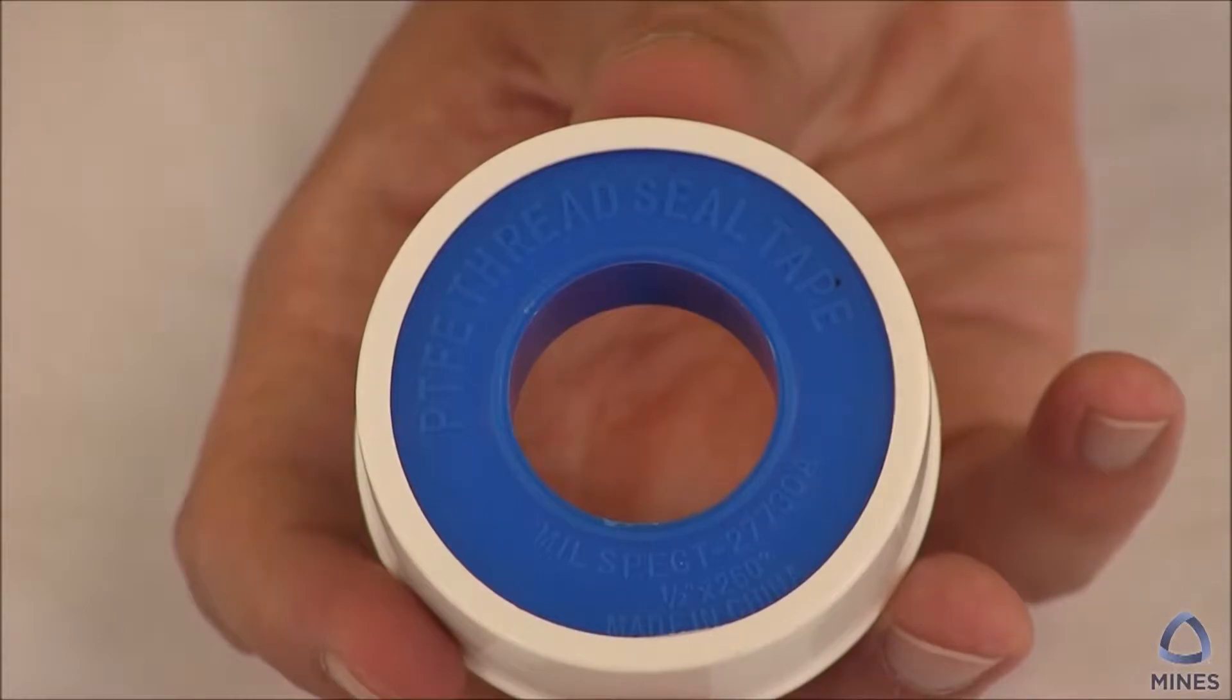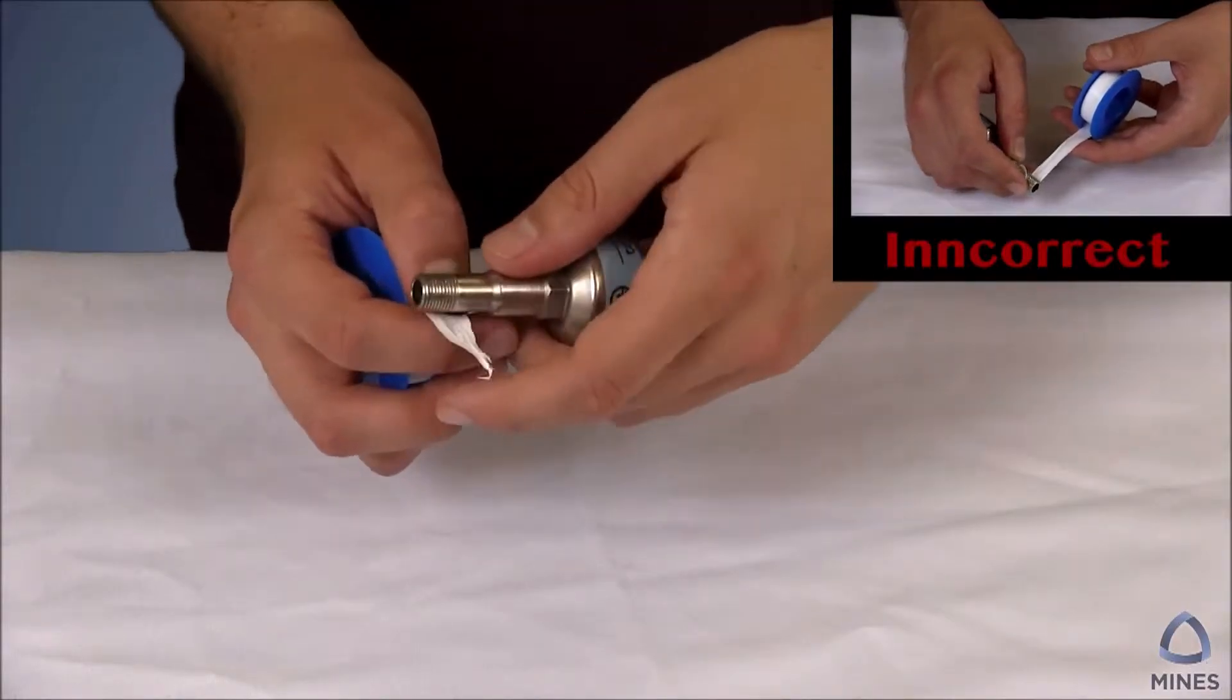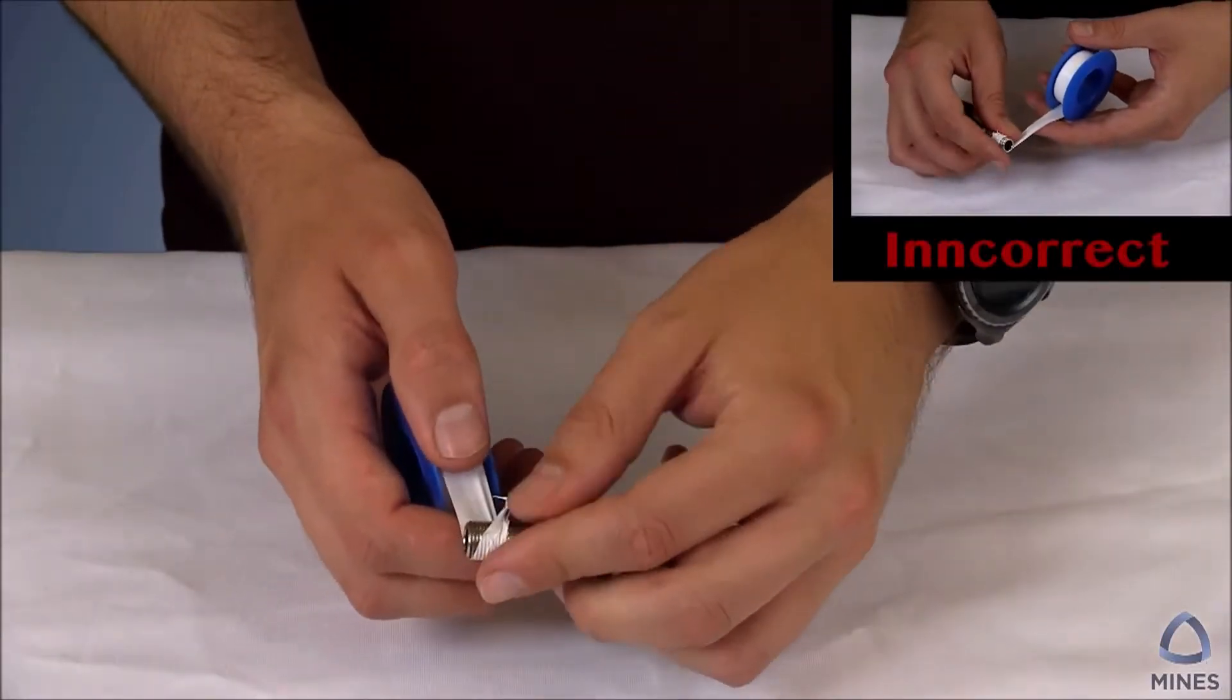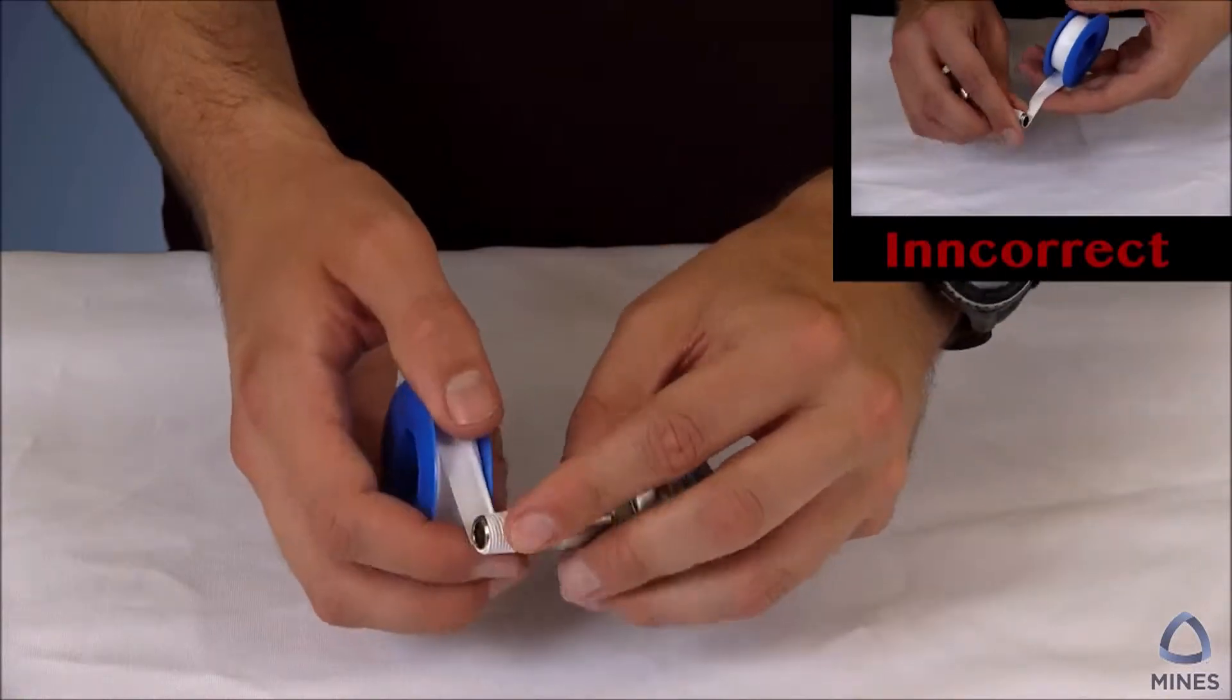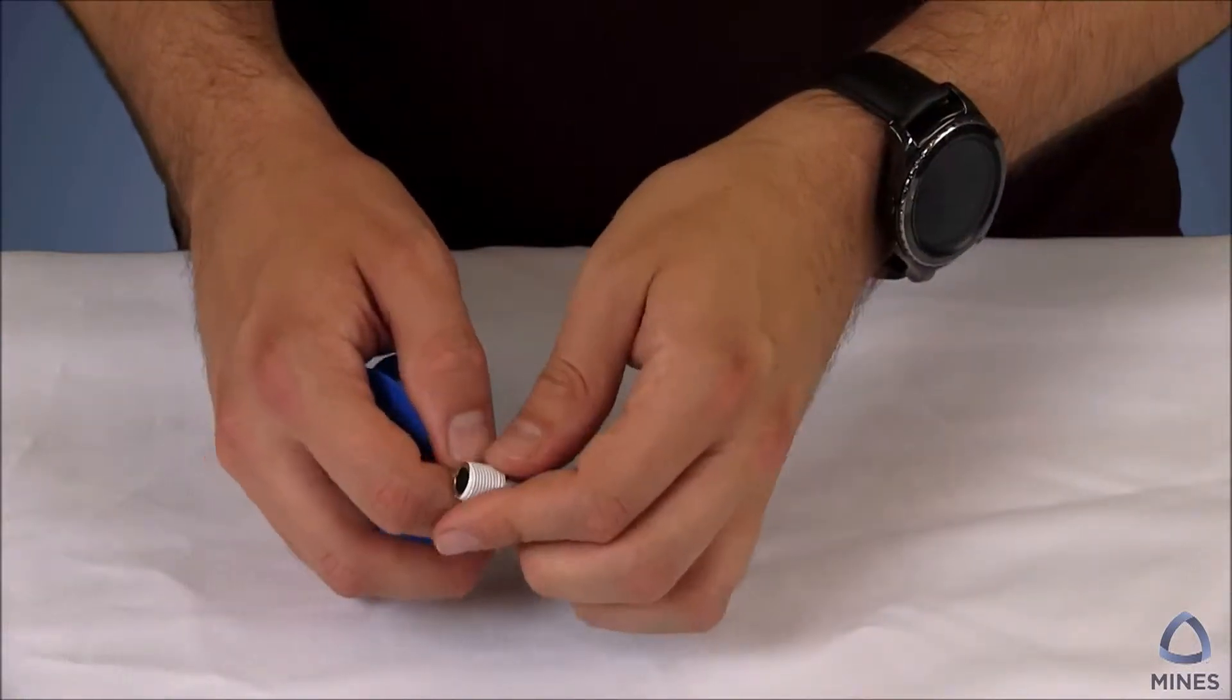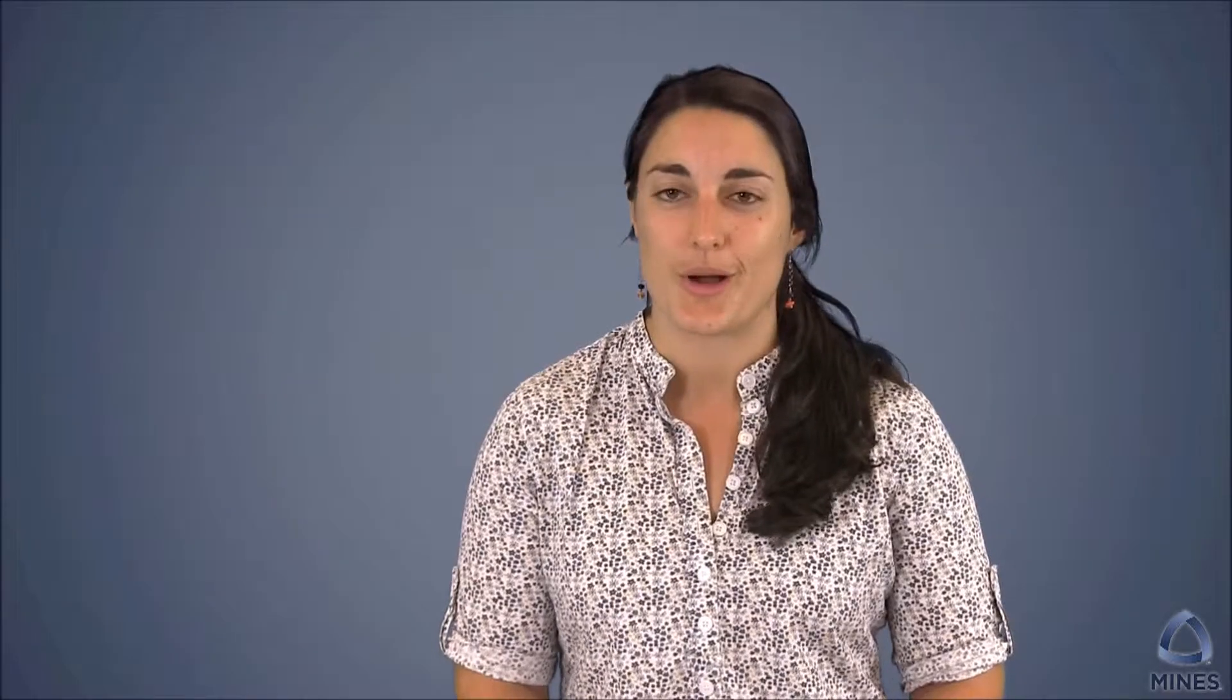Next, pipe thread fittings are prone to capillary voids forming between the male and female threads, which can lead to a leak pathway. This problem is typically addressed through the use of thread sealing tape, which is made from PTFE. When applying thread sealing tape, make sure not to use too little or too much. Usually two wraps around the fitting should work well.